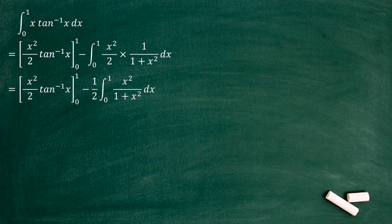Now we need to evaluate integral x squared over 1 plus x squared. Here the numerator degree is 2 and also the denominator degree is 2, so we need to express the numerator value in terms of the denominator.